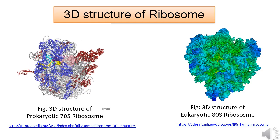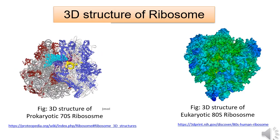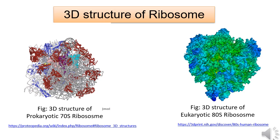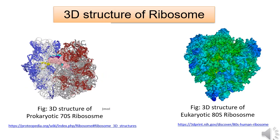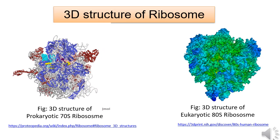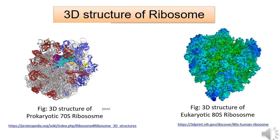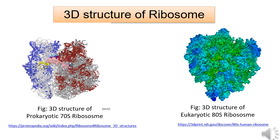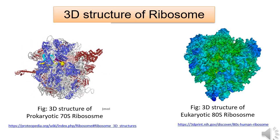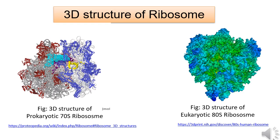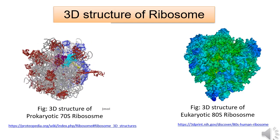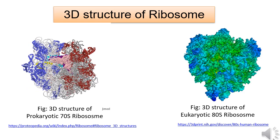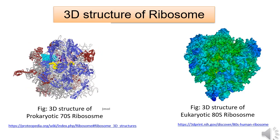In this slide, we consider the 3D structural difference between a prokaryotic ribosome and a eukaryotic ribosome. On the left-hand side is the prokaryotic ribosome of 70S and on the right-hand side is the 3D structure of the 80S ribosome. From the structure itself, we can quite clearly understand that the eukaryotic ribosome is much more complex than a prokaryotic ribosome.